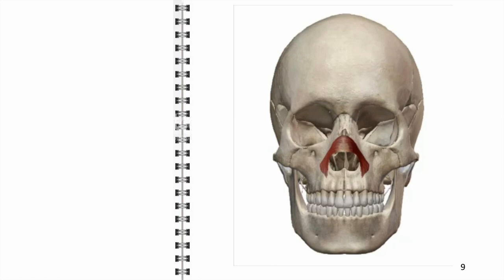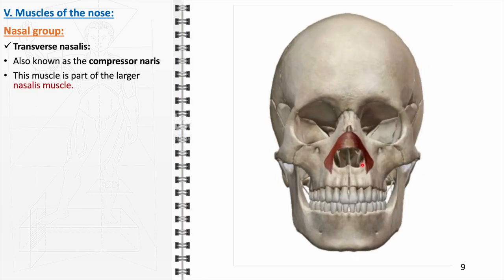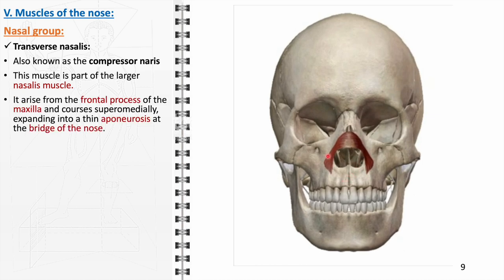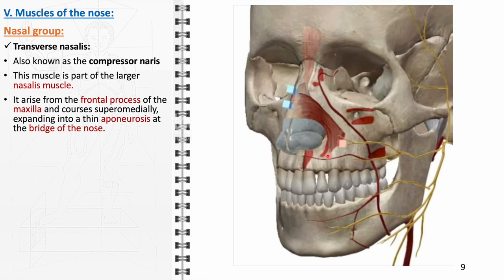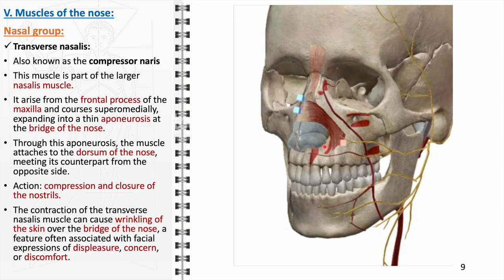Within the nasal group, the transverse nasalis, also referred to as the compressor naris, is an integral part of the larger nasalis muscle. It originates from the frontal process of the maxilla, forming a thin aponeurosis at the bridge of the nose and attaching to the dorsum where it intersects with its counterpart from the opposite side. Its primary function is to compress and close the nostrils, and its contraction produces wrinkling over the bridge of the nose associated with displeasure or discomfort. It receives blood supply from the facial artery and is innervated by the facial nerve.